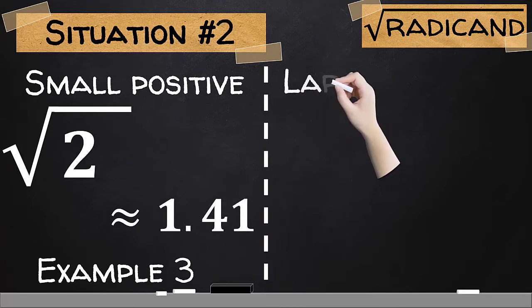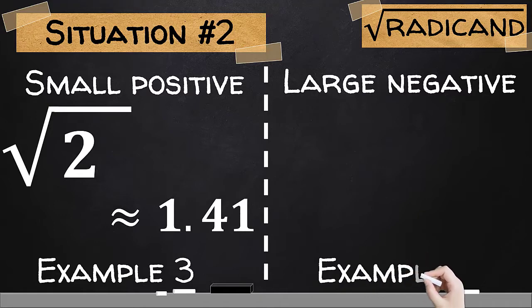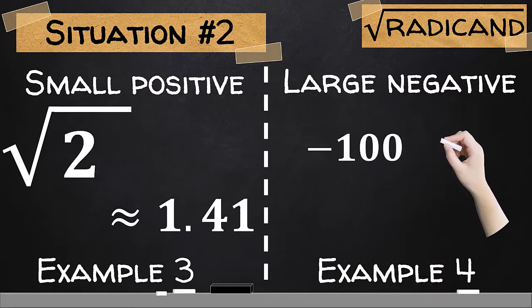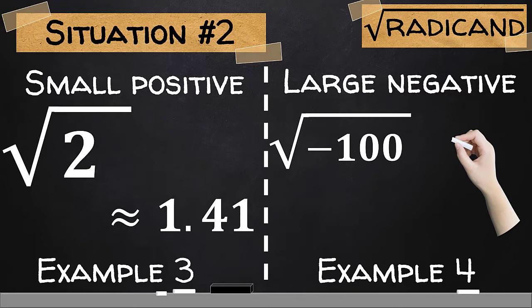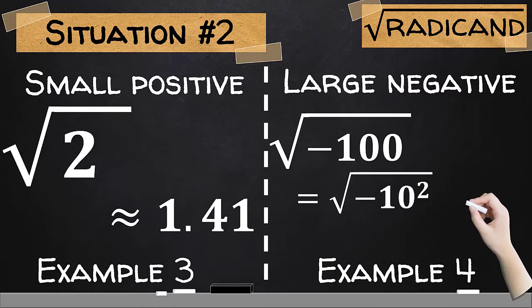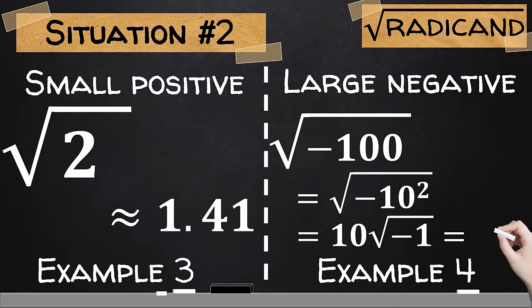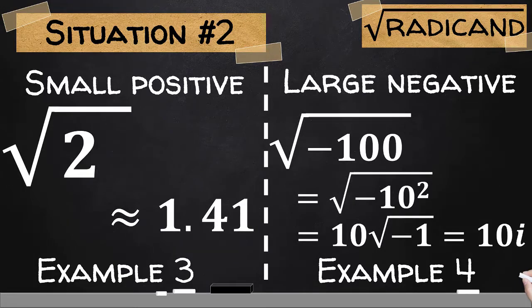The second example for this situation is where the radicand is considered to be a large negative. Here in example number 4, let us consider the radicand to be a large value but negative, which is negative 100. Solving for the principal square root of this number, this could be the square root of negative 10 squared. Now 10 can be moved out and we have 10 square root of negative 1. Still, we do have negative 1 here. In short, the final result for this is where we change the square root of negative 1 to the symbol of imaginary numbers, which is i. And hence, we will have 10i.